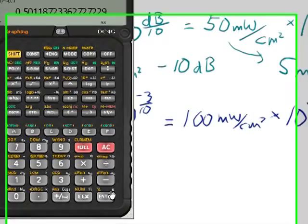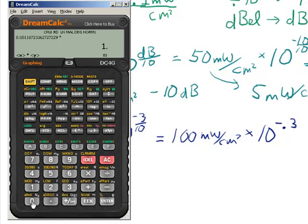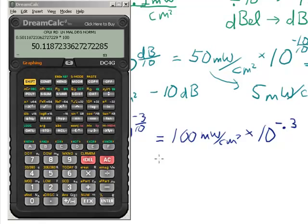And if I look at what 10 raised to the minus 0.3 is, that's equal to times 100, that's equal to 50 milliwatts per square centimeter.